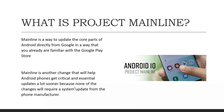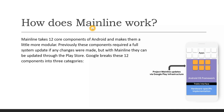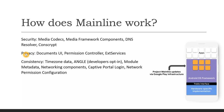With mainline, updates arrive much sooner because none of the changes require a system update from the phone manufacturer — Google will take care of everything. Whenever any core part has to be updated, the entire system update is not required. Mainline takes 12 core components of Android and makes them more modular. Previously these components required a full system update, but with mainline they can be updated through the Play Store.